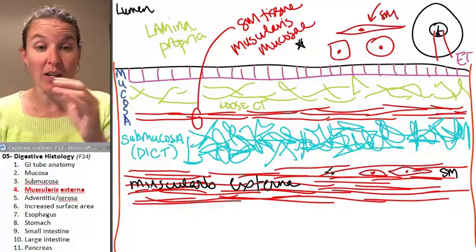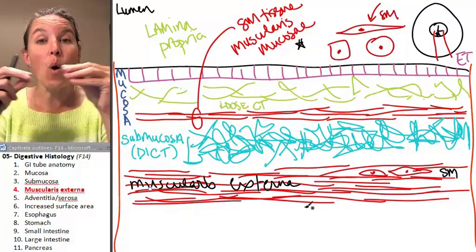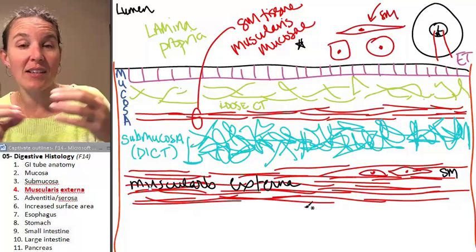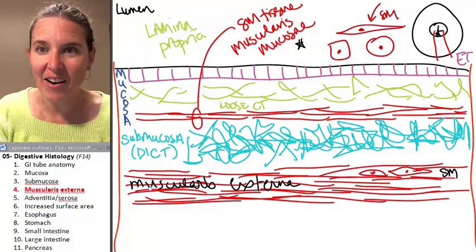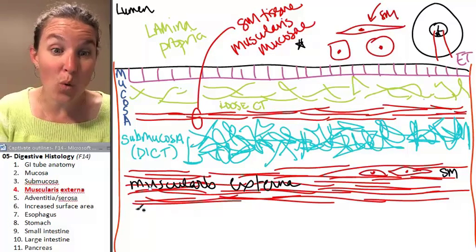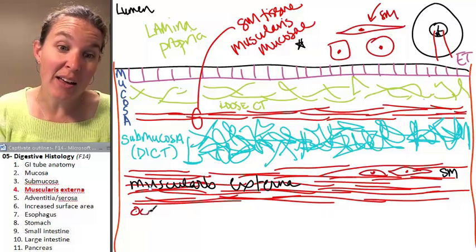In multiple layers of muscularis externa, one layer is all oriented in one direction. And then there's another layer. And the second layer is oriented in another direction.